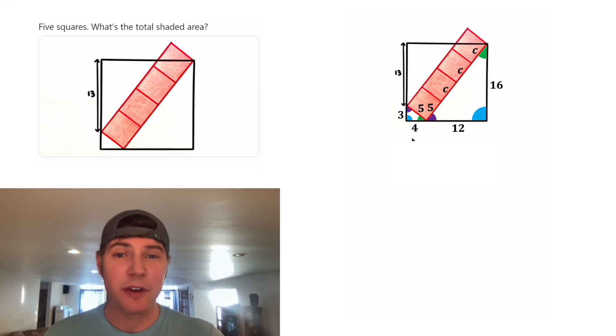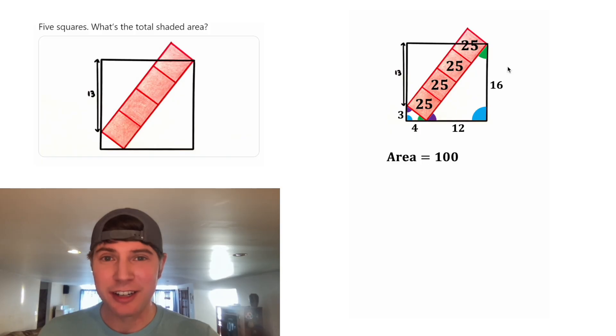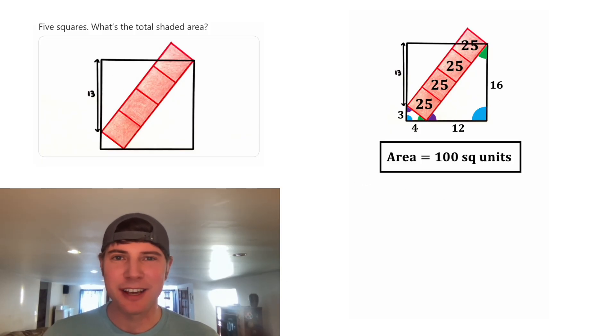And the area of this square would be five times five, which is 25. And 25 would be the area of all these squares. So if we want the area of the shaded region, we're going to do four times 25. And four times 25 is 100. And that is the answer to our question. Let's put a box around it. How exciting.